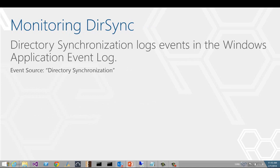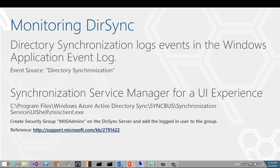For monitoring directory sync, the Windows application event log is where you'll find activity logs for the directory synchronization tool. If you prefer a visual experience, you can also run the synchronization service manager. Heads up — if you do choose this option, you may get an error saying the user is not a member of the required security group. If so, create a security group named MIIS Admins and add the logged-in user to it. There's a KB article that explains why this happens and the workaround in more detail.